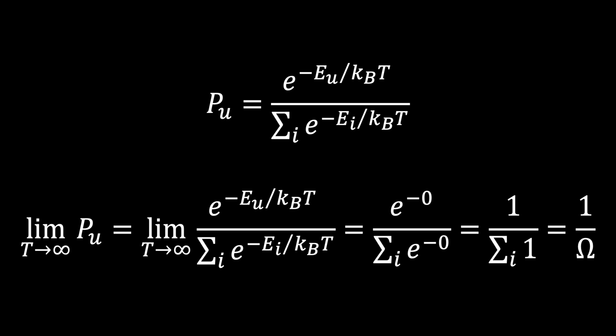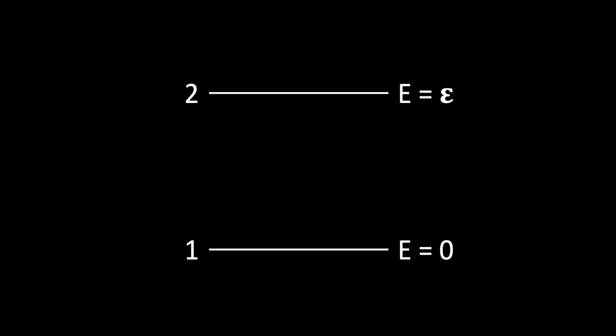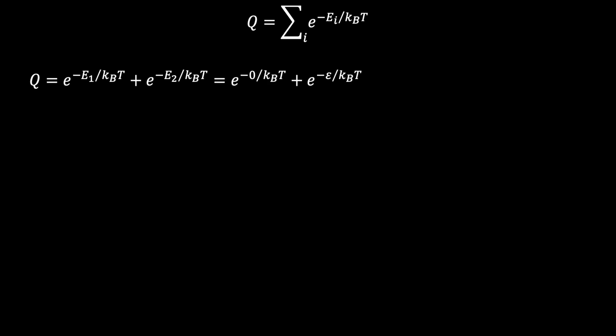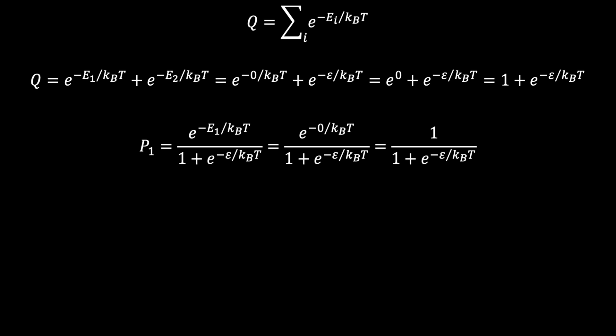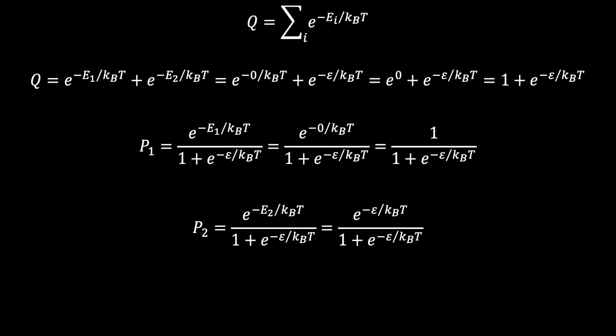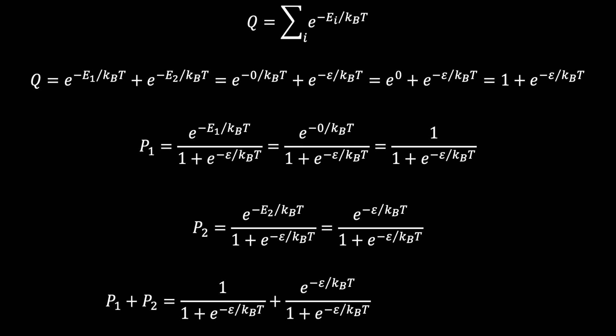As a final exercise, let's turn to the physical chemist's favorite system: the two-level system, where there are only two states. We will say the lower state has an energy of zero and the upper state has an energy epsilon. We write out our partition function, which has only two terms. Substituting zero and epsilon for the energies, the partition function equals e raised to zero plus e raised to negative epsilon divided by kbT, which simplifies to 1 plus e raised to negative epsilon over kbT. The probability of being in the lower level (ground state) is 1 divided by that denominator, and the probability of being in the upper level (excited state) is e raised to negative epsilon over kbT divided by the same denominator. Adding both probabilities together, they cancel out to 1, as expected.